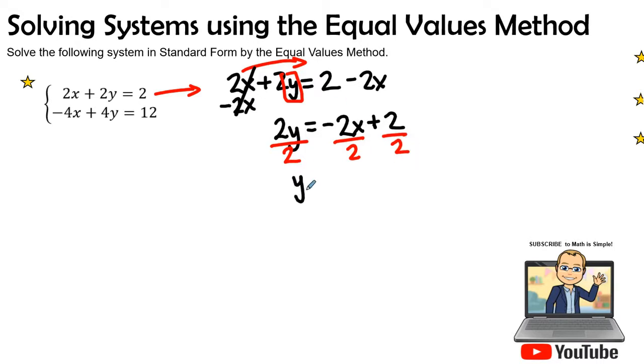What we need to do to get y by itself, we're going to divide by the coefficient. And so under each term, I'm going to divide by 2. This gives me y equals negative x. How did I get negative x? Because this is a positive 2, negative 2, a negative and a positive is a negative. And 2 divided by 2 is 1, so I have my imaginary 1, so I have negative 1x plus 1 right there.